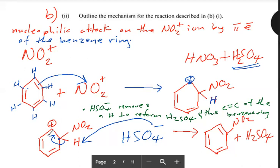If you look on the internet, you might see the formation of an arenium ion complex — that is not needed for CAPE. You might see an intermediate step between step one and two, but that is not needed for CAPE. Just these two steps.